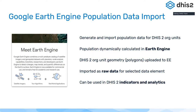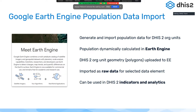This is dynamically calculated in real time in Earth Engine based on the WorldPop datasets. It essentially works by uploading the DHIS2 org units with the geometry associated with those org units. Earth Engine will then look at the geometries and calculate the population data in real time based on those geometries and the WorldPop datasets. Once Earth Engine is done computing those numbers, we can import them back into DHIS2 as raw data — as normal data elements and data values.